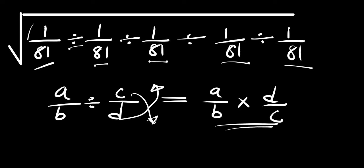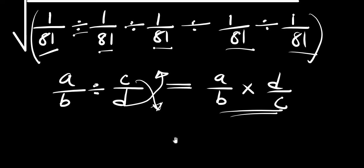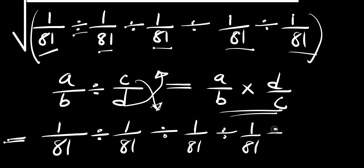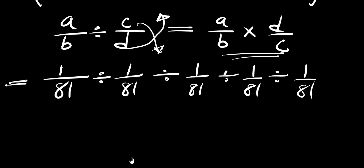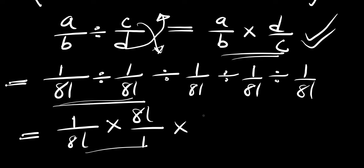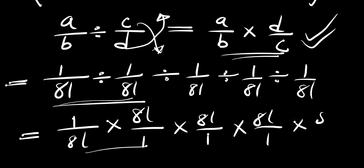What we are going to do is just copy what we have inside this bracket, so we have 1 divided by 81, divided by 1 divided by 81, divided by 1 divided by 81, and divided by 1 divided by 81. Now if we apply this identity, we are going to have 1 divided by 81 — considering these two terms — times 81 divided by 1. This now becomes one term, and we also have times 81 divided by 1, then times 81 divided by 1, and finally times 81 divided by 1.